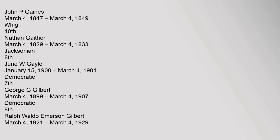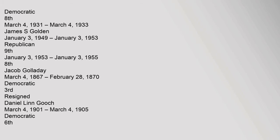June West Gale, January 15, 1900 to March 4, 1901, Democratic, 7th. George G. Gilbert, March 4, 1899 to March 4, 1907, Democratic, 8th. Ralph Waldo Emerson Gilbert, March 4, 1921 to March 4, 1929, Democratic, 8th; March 4, 1931 to March 4, 1933.